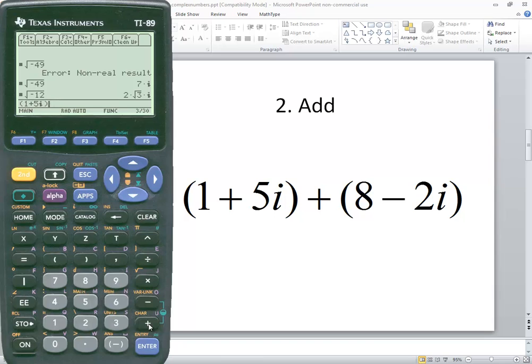closing parentheses plus beginning parentheses 8 minus 2, second catalog for the i and then closing parentheses and then press enter. So our answer will be 9 plus 3i.